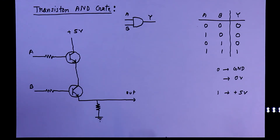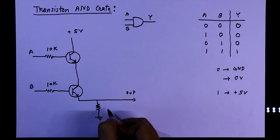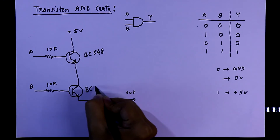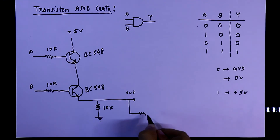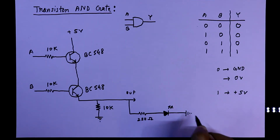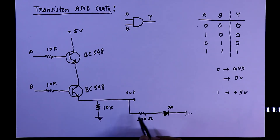Now we will see this circuit on the breadboard. For the practical circuit we will use 10 kilo-ohms for the base resistors and 10 kilo-ohms for the pull-down resistor. The transistor used is BC548 — any NPN transistor can be used. To see the output, we connect a 220-ohm resistor followed by an LED to the ground. The negative pin of the LED is connected to ground and the positive pin is connected to the resistor.